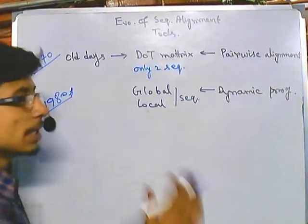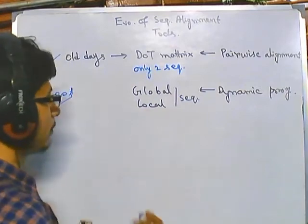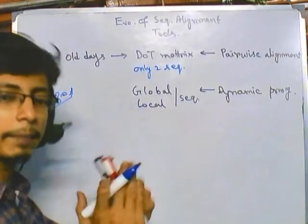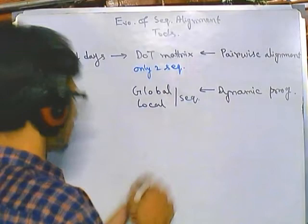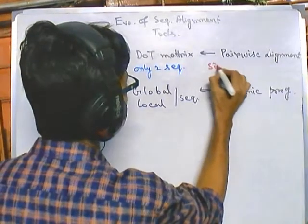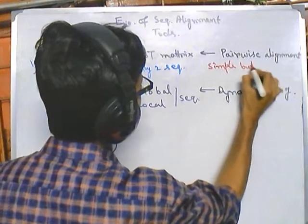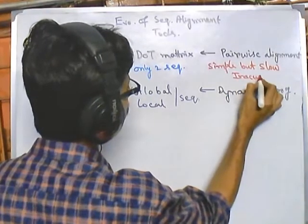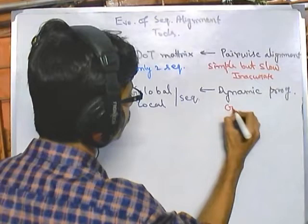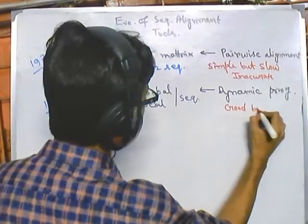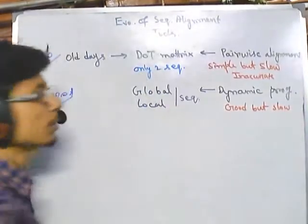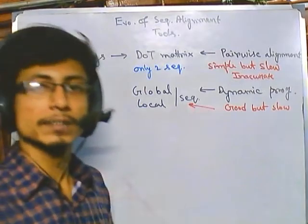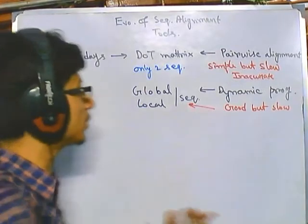Right after the 1980s, around 1985, dynamic programming was further modified because we needed to achieve alignment much faster. The earlier alignment methods were simple but inaccurate and slow. Global and local sequence alignment were good but slow. So the goal was to achieve this task in less time by increasing the speed.